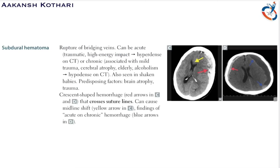Subdural hematoma is majorly due to rupture of the bridging veins — the veins that bridge different parts of the brain. It can be acute or chronic. Acute subdural hematoma is usually traumatic, caused by high-energy impact, and shows a hyperdense finding on CT scan.